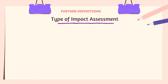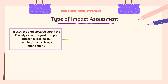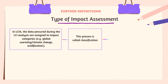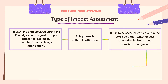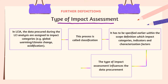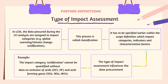Type of impact assessment: in LCIA, the data procured during the LCI analysis are assigned to impact categories — for example, global warming, climate change, acidification. This process is called classification. It has to be specified earlier within the scope definition which impact categories, indicators, and characterization factors apply. The type of impact assessment influences data procurement. For example, the impact category acidification cannot be quantified without data on emissions of acids such as hydrogen chloride, hydrogen fluoride, and acid-forming gases like sulfur dioxide, nitrous oxide, and ammonia.